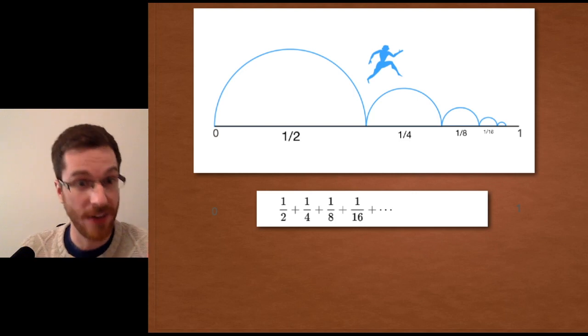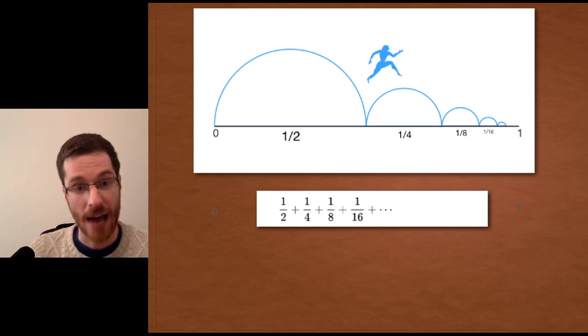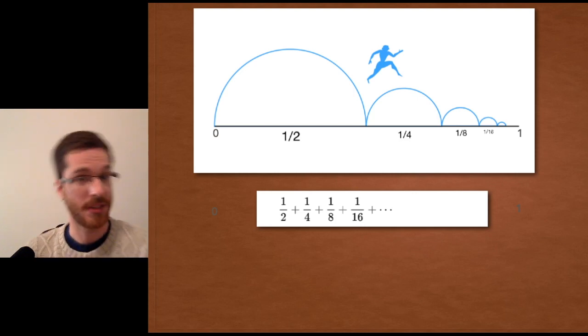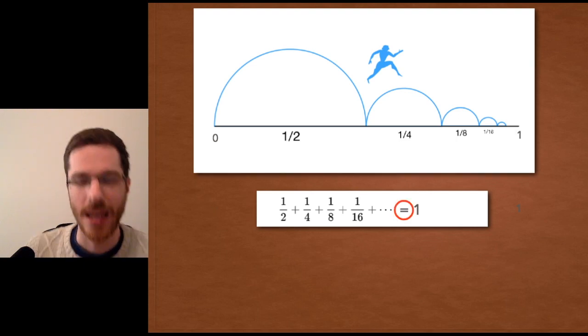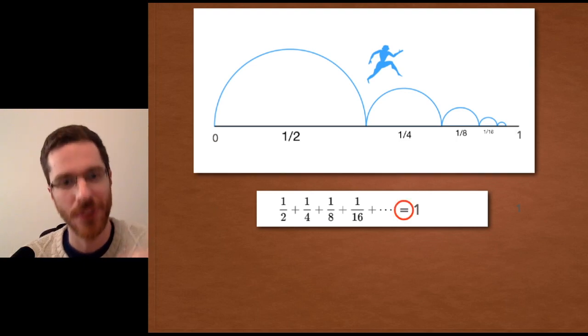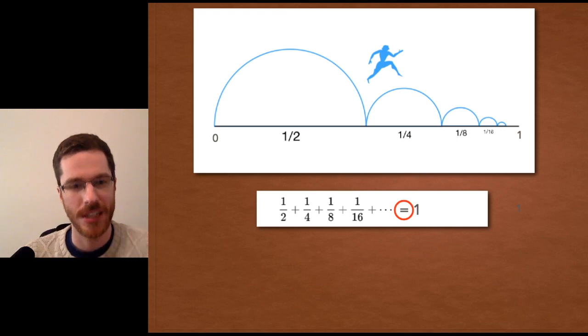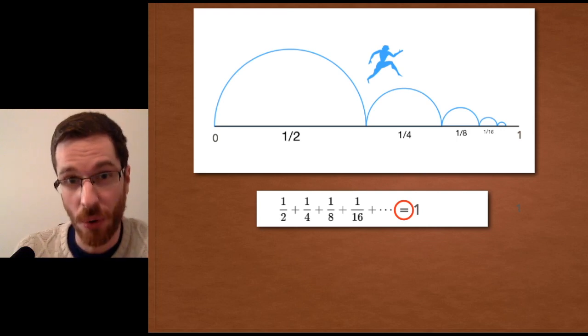So this looks very similar to what we just saw, a half plus a fourth plus an eighth plus a sixteenth dot dot dot. And then we want to know, how could this series ever equal one?